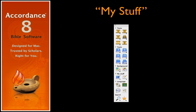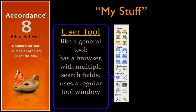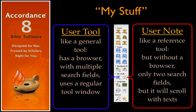Accordance allows users to construct two different kinds of modules. The first kind is a user tool, which works like a general tool with its browser and tool window and multiple search fields. The second, a user note, is more like a reference tool and can be opened in a parallel pane to scroll along with the text.